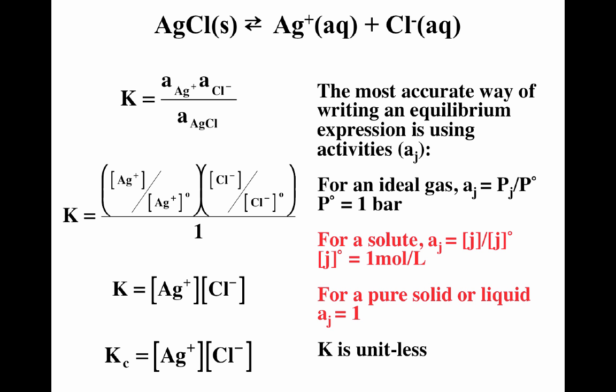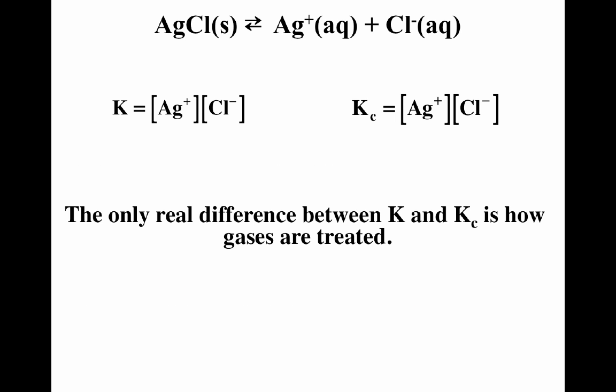For silver chloride going to silver ions plus chloride ions, written properly in terms of activities: activity of silver ions times activity of chloride ions divided by activity of silver chloride. Pure solids and pure liquids do not appear — they have activities of one — so on the simplified expression they're gone. We can write in terms of concentrations, remembering it's concentration divided by one mole per liter so it is unitless. Notice that in this case K and K sub C are exactly the same. The only difference between K and K sub C is how you treat gases — because we have no gases here, K and K sub C are exactly the same.